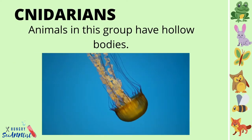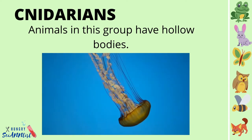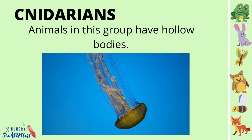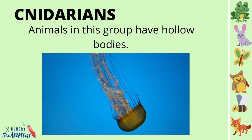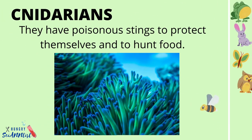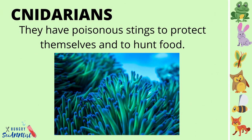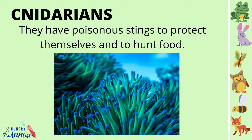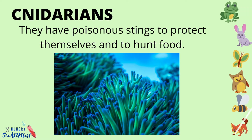Cnidarians. Animals in this group have hollow bodies. They have poisonous things to protect themselves and to hunt food.